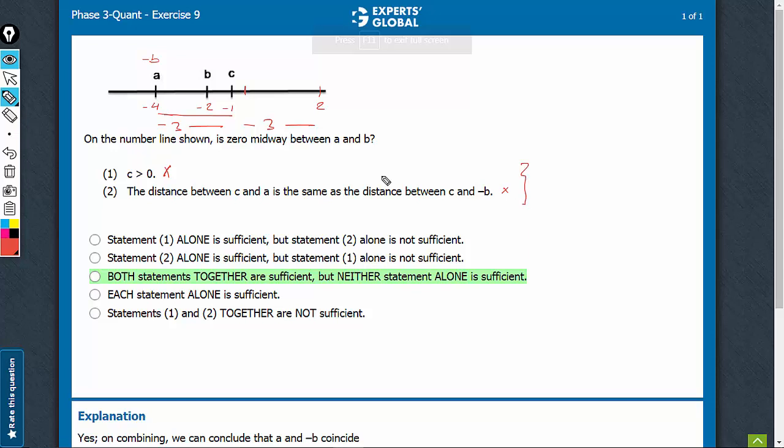On combining, if C is greater than 0, then this particular case we took will not apply, and A and minus B will overlap. If A and minus B are overlapping, 0 has to be right in between the two.